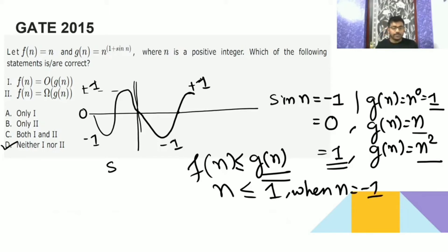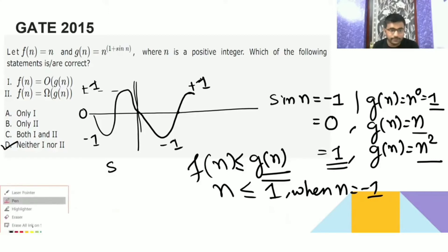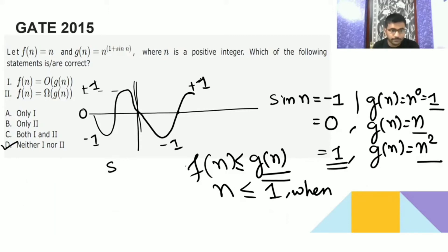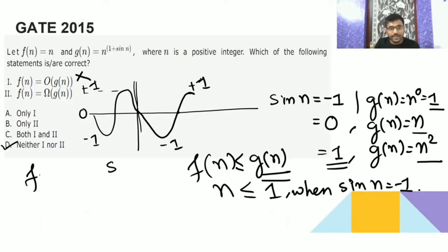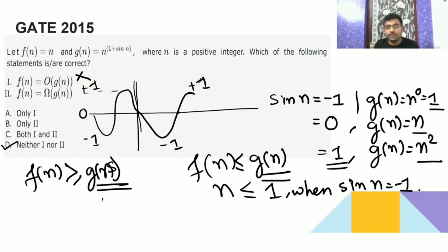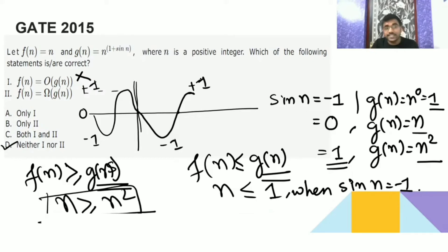So when g(n) equals 1, statement one — that f(n) ≤ g(n) — will be false, because f(n) is n which is greater than 1. And when g(n) equals n squared, statement two — that f(n) ≥ g(n) — is also false, because n is not greater than n squared. So neither statement 1 nor statement 2 holds, because based on the value of sin n, g(n) varies.